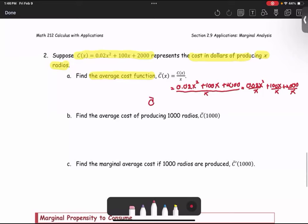That gives us C̄(x) in the simplified form: 0.02x, because x and x² reduce, plus 100 (since 100x and x cancel out), and then the last term would be 2000 divided by x.